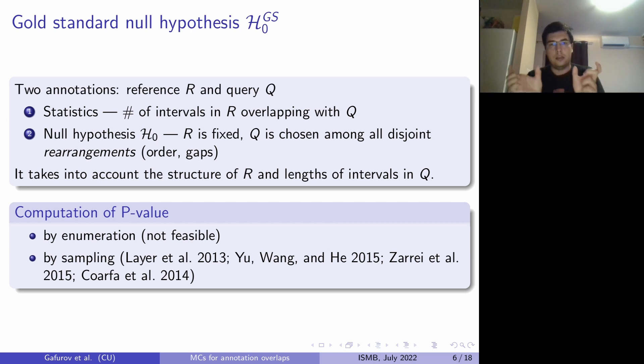So we can change the order of all intervals in Q and we can change the gaps. We have to fix the set of intervals. That formulation takes into account the structure of intervals in R and also takes into account the lengths of intervals in Q. So that's why it is a popular choice among scientists.